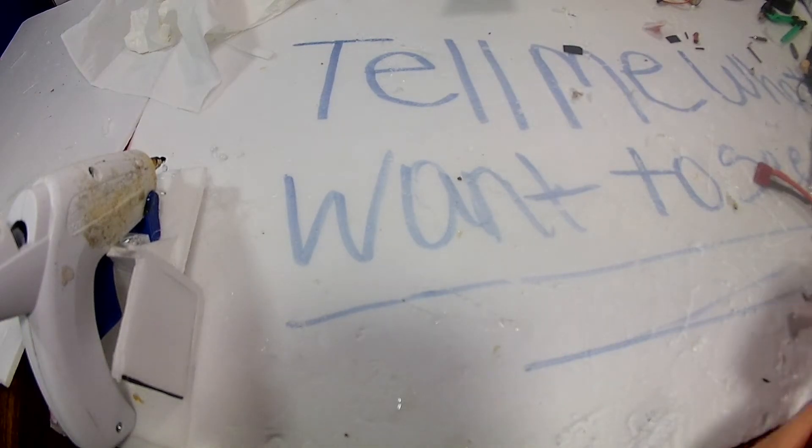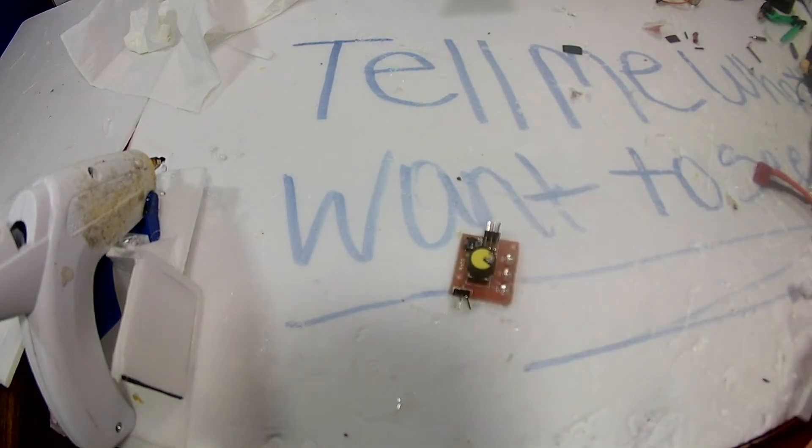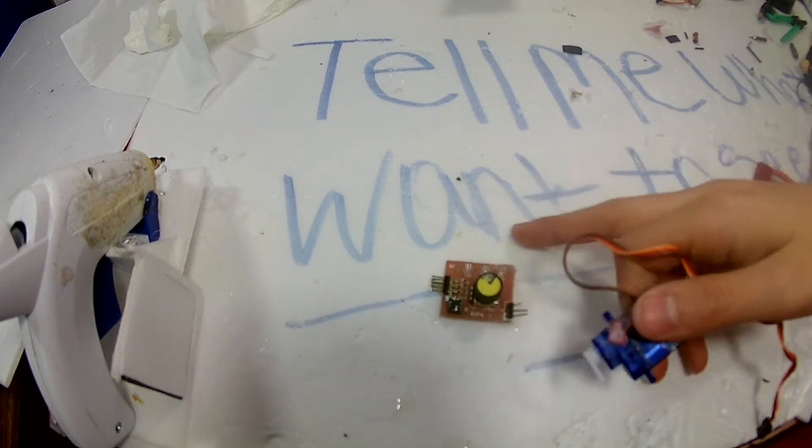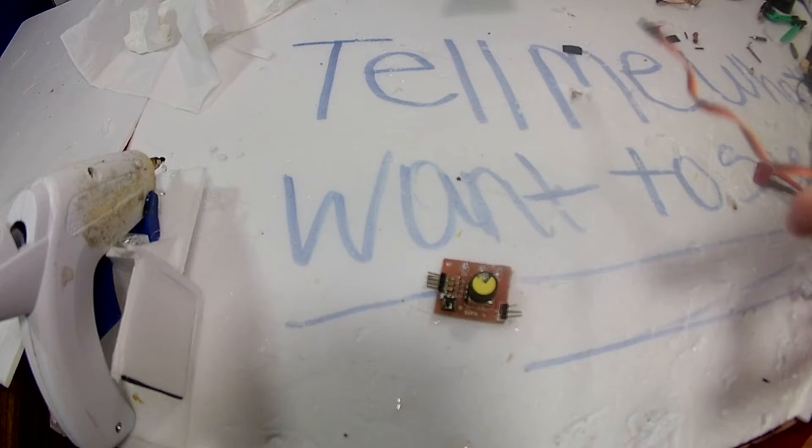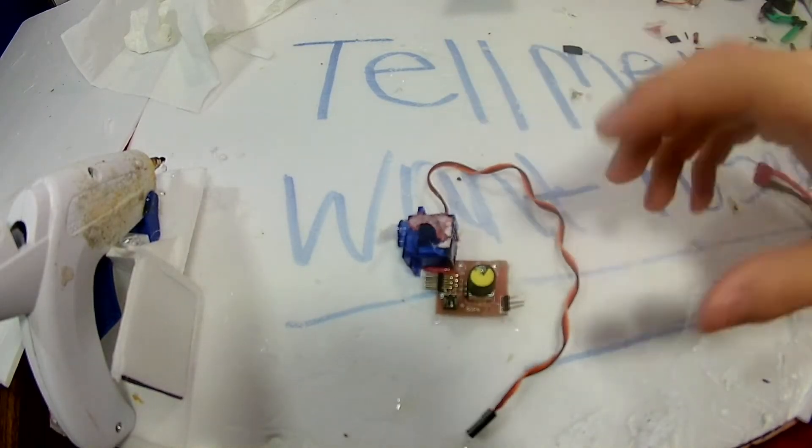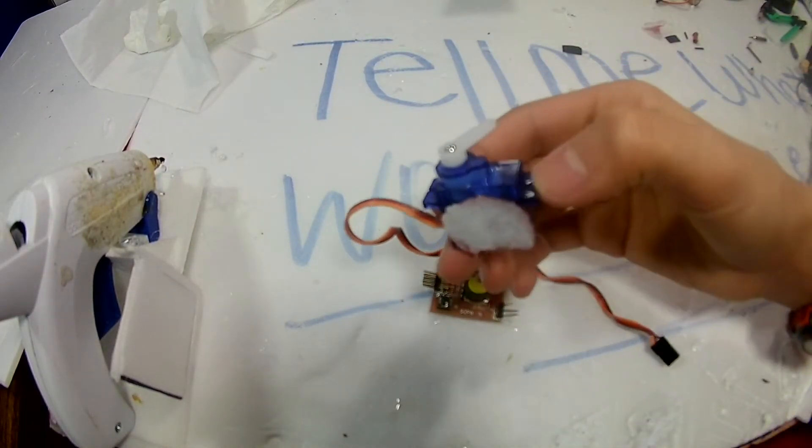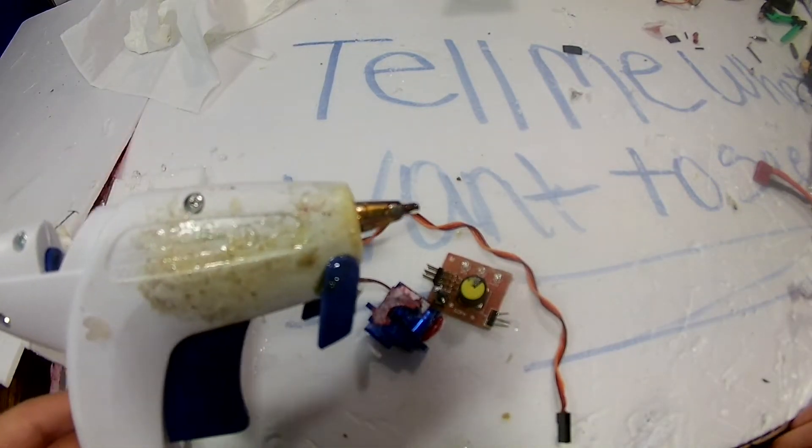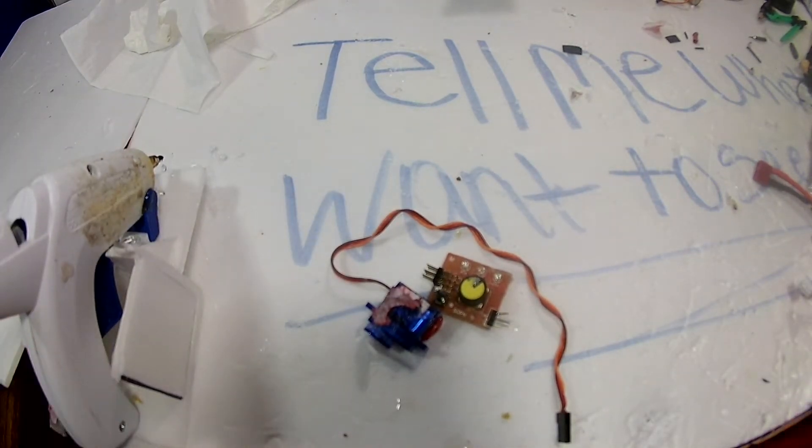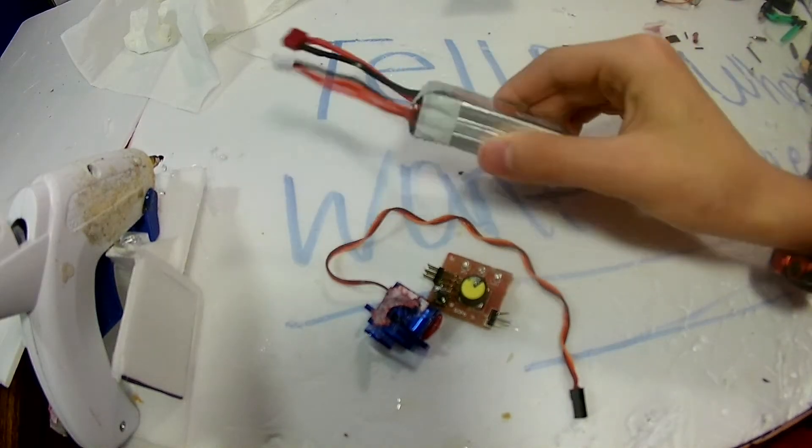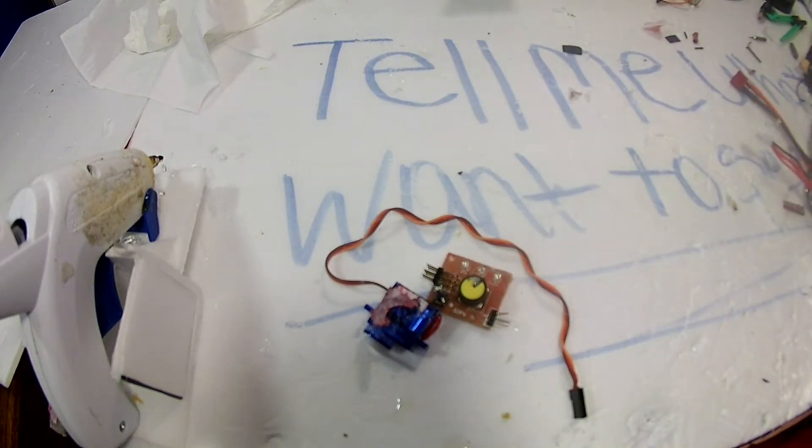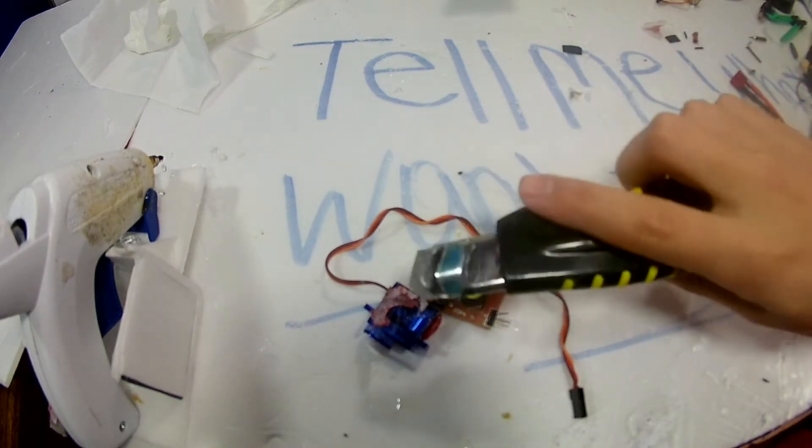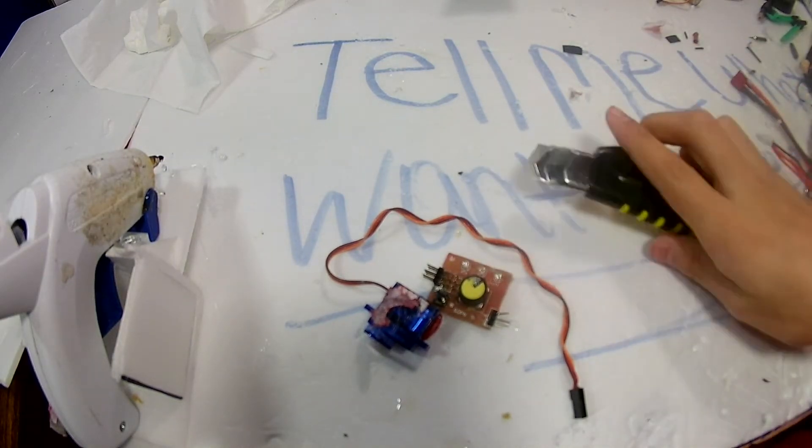First, you're going to need a servo tester or a receiver and transmitter. I recommend getting a servo tester—it's like a dollar fifty on eBay and you can get it from China. Next, you'll need a servo. I have a 9-gram servo. You'll also need hot glue, a power supply, and some kind of knife, which I'll show you later.